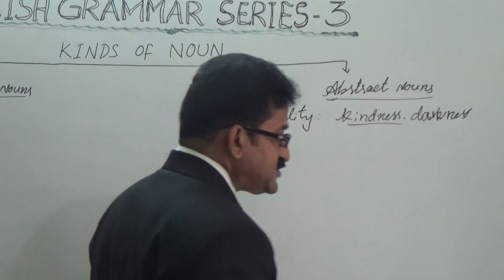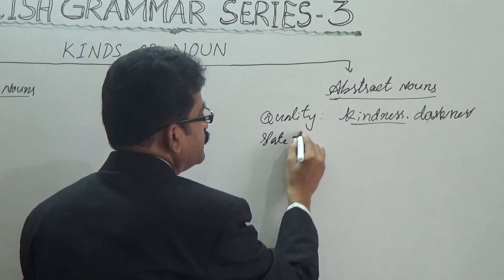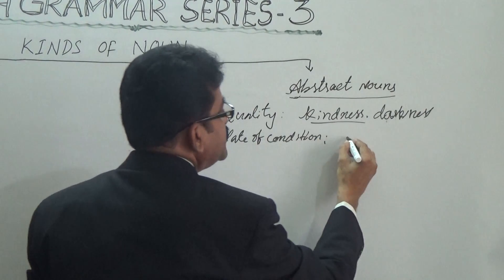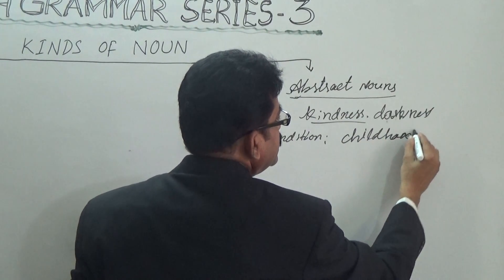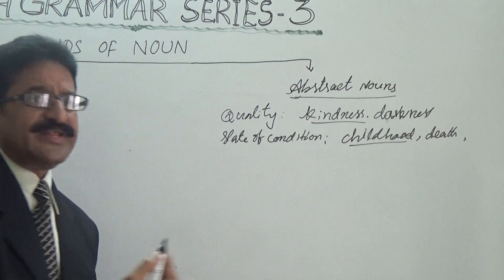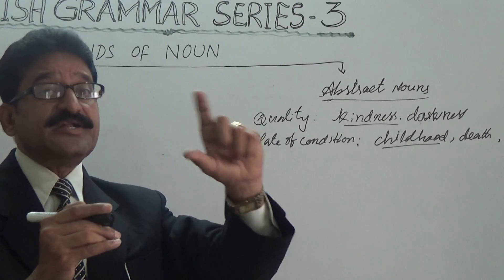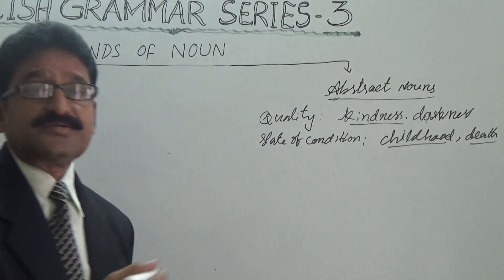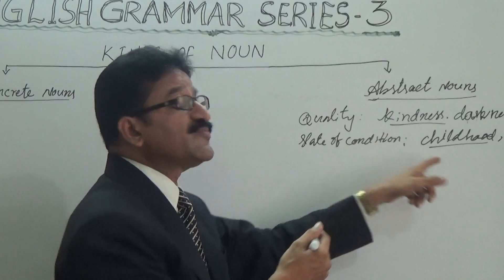The second one is state of condition. For example, childhood and death. Childhood — we have to feel it; we cannot have a physical feature for that. A child has a physical feature, but childhood does not. In death, we cannot see death itself — we can see a dead body, but not death. These are states of conditions.